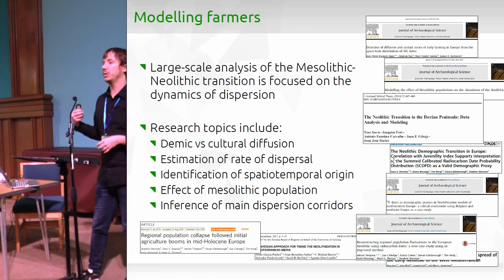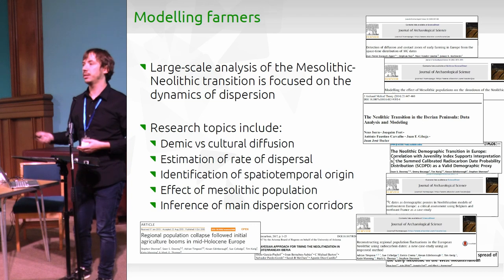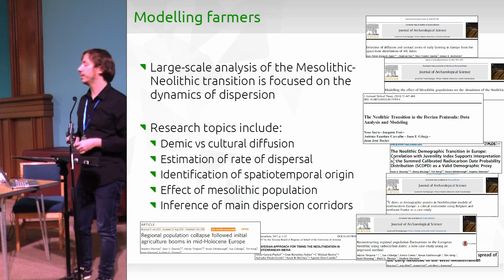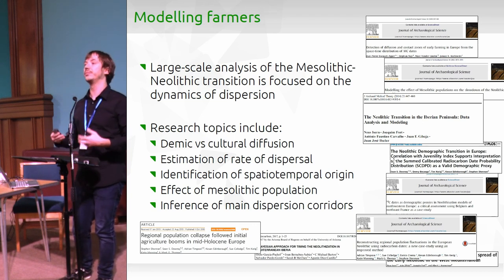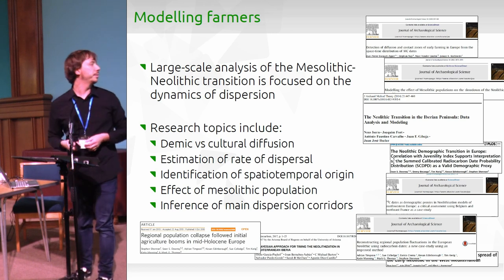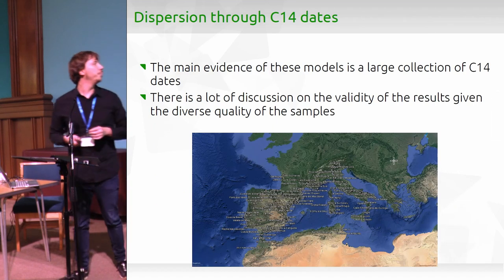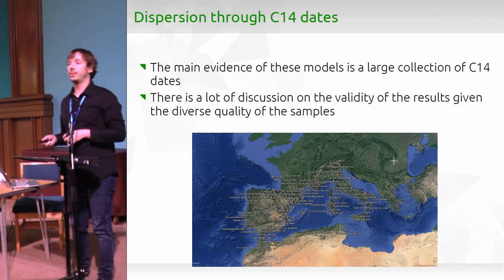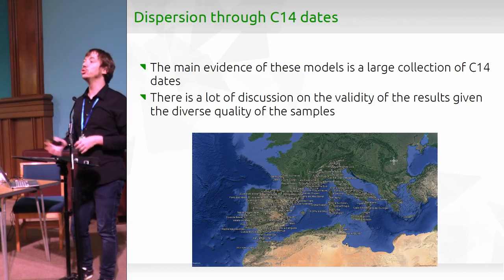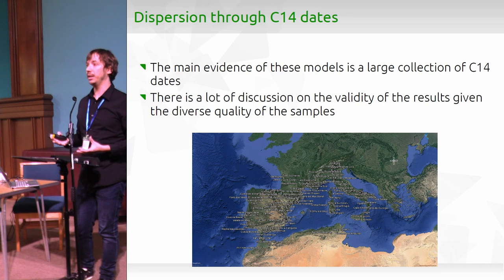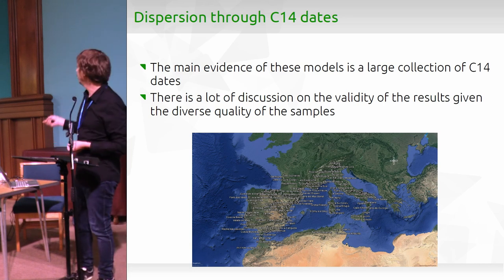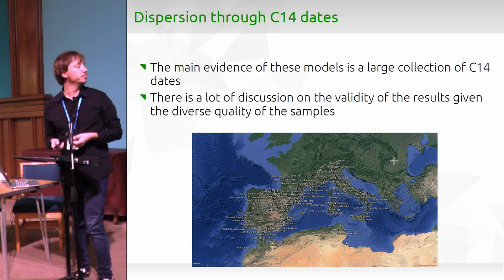Another key question is the interaction between these new farmers and herders and the people that already lived in the territory — whether they interact and whether that interaction was positive or negative. All this research is typically done using a large-scale C14 database, as illustrated in the map shown here.